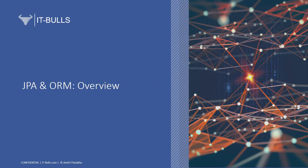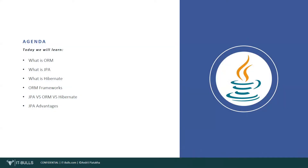Hello team! Today we start a very important topic. We are going to learn this topic with the help of many different lessons. Today we started learning Jakarta Persistence API, formerly known as Java Persistence API. We are going to learn some basic and key definitions — ORM, JPA, and Hibernate. I am also going to give an overview of ORM frameworks and hold a comparison of these different terms. At the end of the lesson, we are going to talk about JPA advantages and why we should choose JPA.